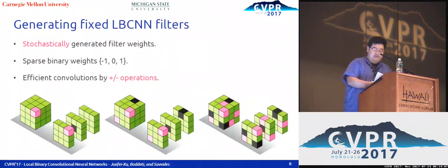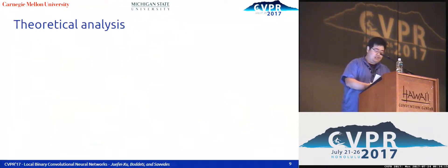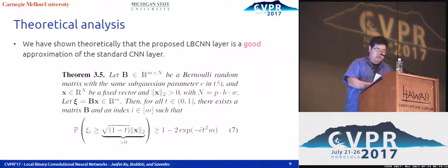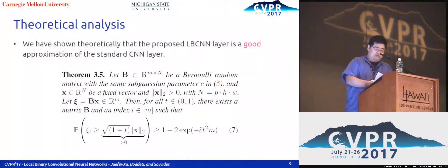The fixed LBC filters are stochastically generated with sparse binary weights. The convolution can be extremely efficient by using addition and subtraction operations. We have shown theoretically that the proposed LBCNN layer is a good approximation of the standard CNN layer. This is also empirically verified.